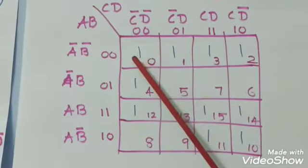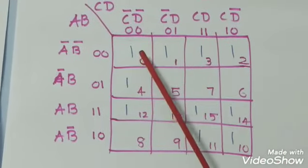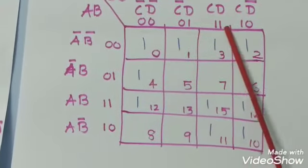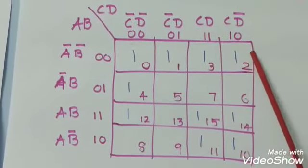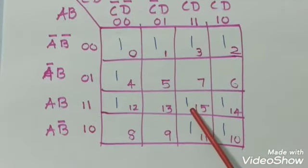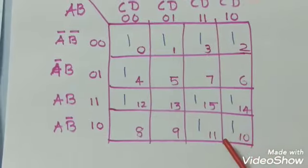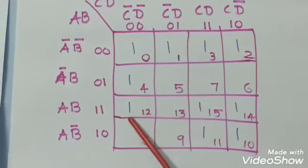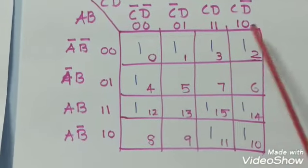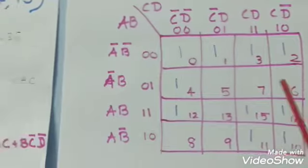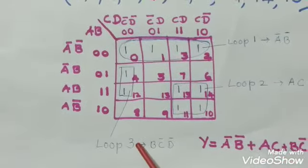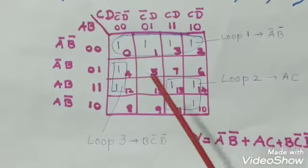Next step is making loop. Here, these 4 ones are taken together and form a loop called quad loop. Then, these 4 ones taken together and form a loop. Next, these 2 ones taken as a pair loop. So, in this figure, there are 3 loops. Loop 1, loop 2 and loop 3. The 2 quad loop and 1 pair loop.